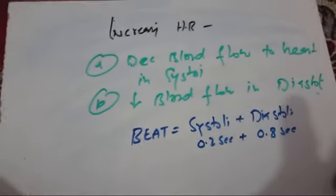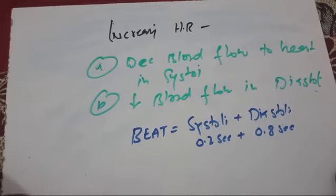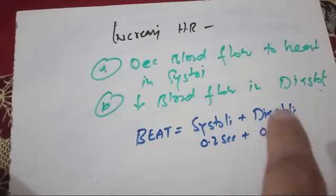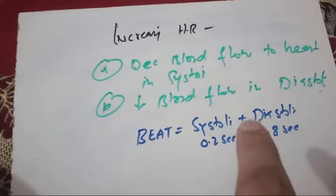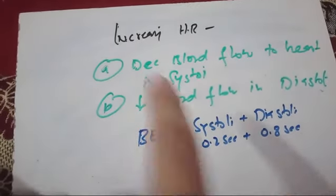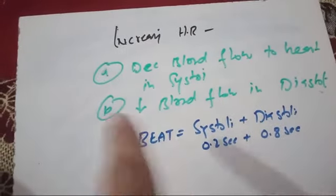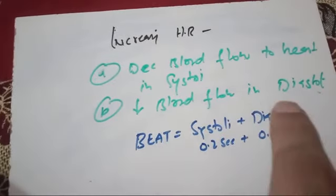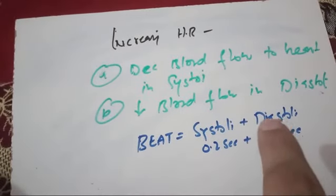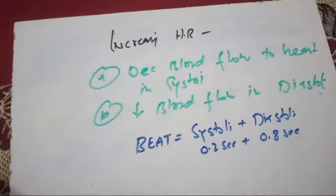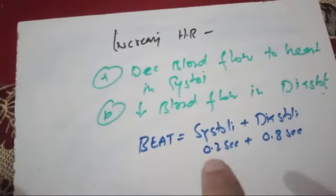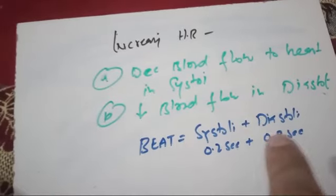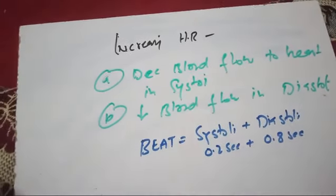Another MCQ: increasing heart rate causes decreased blood flow to the heart in diastole. One cardiac cycle equals systole plus diastole. The heart spends 0.8 seconds in diastole and 0.2 seconds in systole, and blood flow is mainly during diastole. Increasing heart rate decreases diastole duration, so there is decreased blood flow to the coronary arteries in diastole. Both systole and diastole are shortened, but diastole is more affected — and since coronary flow is mainly during diastole, increased heart rate decreases coronary blood flow.